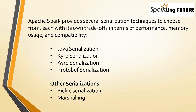There are also terms like Pickle serialization and Marshaling, which are vastly used in the market, especially when working in PySpark. Pickle serialization refers to the serialization mechanism provided by Python's built-in pickle module. Pickling is the process of converting Python objects into a byte stream, which can then be saved to a file or transmitted over a network. Unpickling is the reverse — reconstructing the original Python objects from the byte stream.